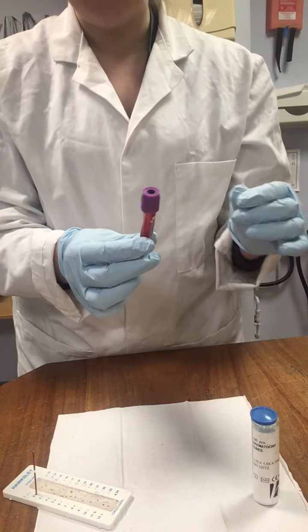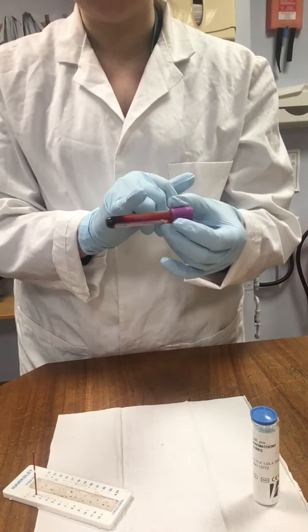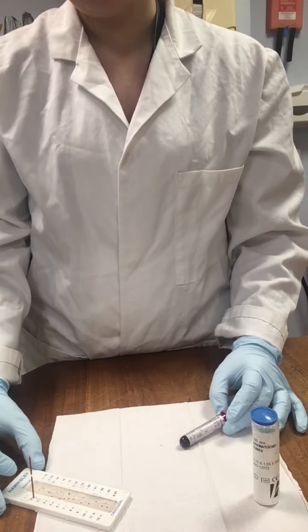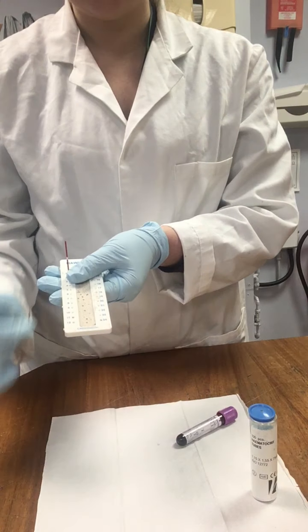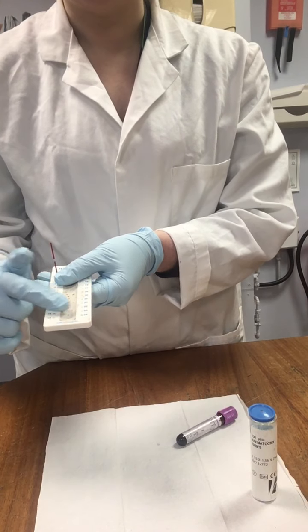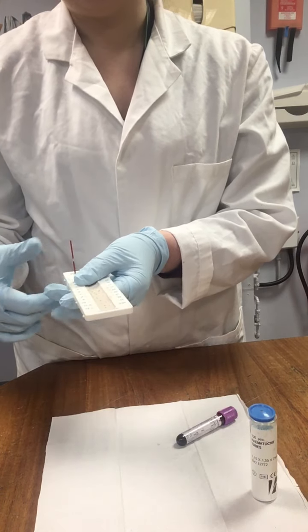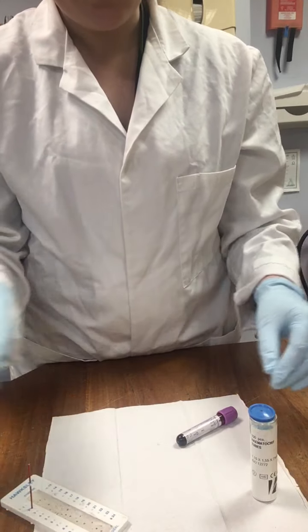We've got our blood sample. We've previously inverted it, so it's now nice and constituted. And what we're going to use is some hematocrit putty in this instance, which is going to provide an obstruction or a plug for the end of our sample.